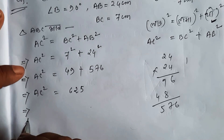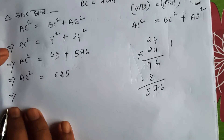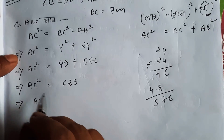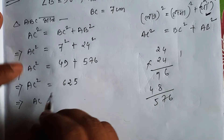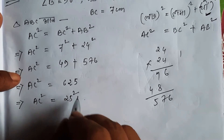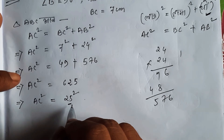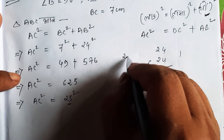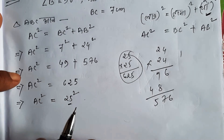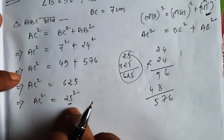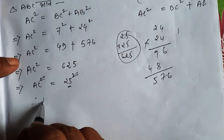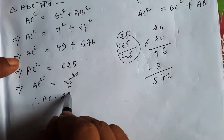We have AC squared equals 625. If we take the square root, AC squared equals 25 squared, because 25 into 25 is 625. Therefore AC is equal to 25.